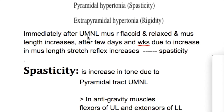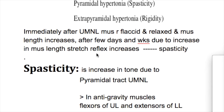Immediately after an upper motor neuron or pyramidal tract lesion, muscles are flexed and relaxed, and the muscle length increases — they are stretched. After a few days and weeks, due to the increased muscle length or stretch, the stretch reflexes increase, leading to spasticity.